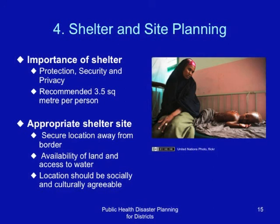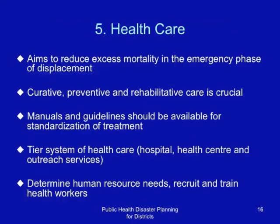Healthcare aims to reduce mortality in the emergency phase of displacement. Curative, preventive, and rehabilitative care is crucial. Manuals and guidelines should be available for standardization of treatment. A tier system of healthcare is important — that is, hospital, health center, and outreach services. Determine human resource needs, recruit and train health workers, and place them where they are needed.